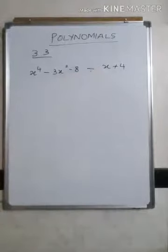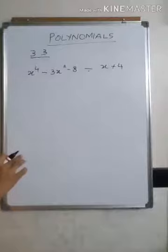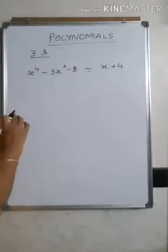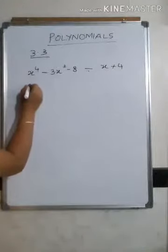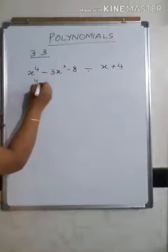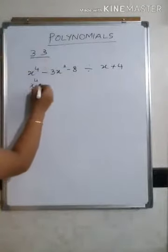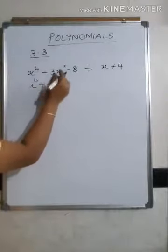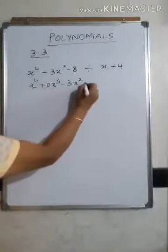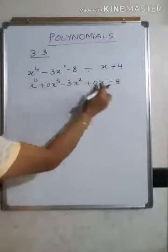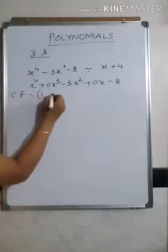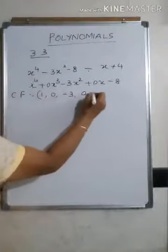Whenever you want to do synthetic division, you first have to write the polynomial in coefficient form, because we need to know the coefficients of the given polynomial. To write it in coefficient form, first write it in index form: x to the power of 4, then plus 0x cubed, then minus 3x squared, then 0x, then the constant. So the coefficient form will be: 1, 0, -3, 0, and -8.